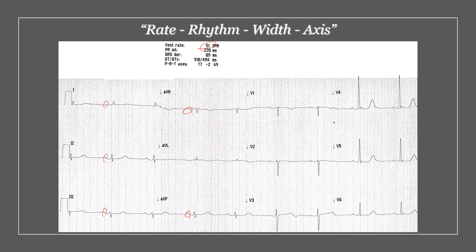Looking at the rhythm, the QRS intervals look regular to me. So I think we've got a regular rhythm here. The complexes are narrow and the axis is slightly leftish. We've got a positive complex completely in lead one and a bit of negativity, so it's heading towards being a bit of a left axis deviation. So: sinus brady and regular rhythm, narrow complex, left-ish axis deviation.